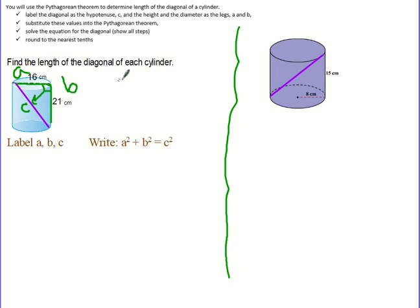Now I'm ready to substitute my numbers in. I have 16 squared plus 21 squared equals C squared. Now I'm going to evaluate my exponents. 16 times 16 and 21 times 21, I get 256 plus 441 equals C squared.